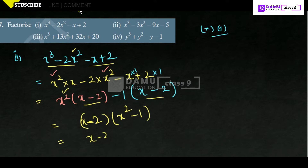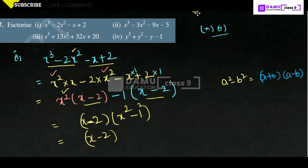So you can write x - 2 into x² - 1. This one you can write in the format of a² - b² = (a + b)(a - b). So let us take x + 1 into x - 1. So we are factorized with three terms: x - 2 into x + 1 into x - 1.